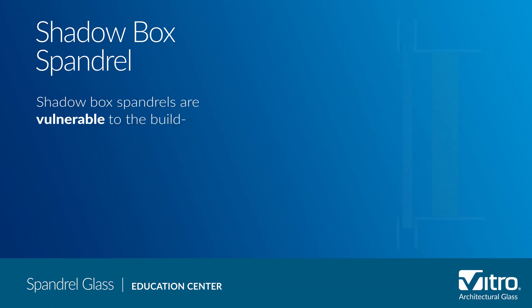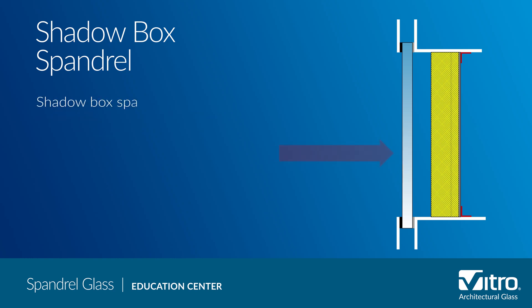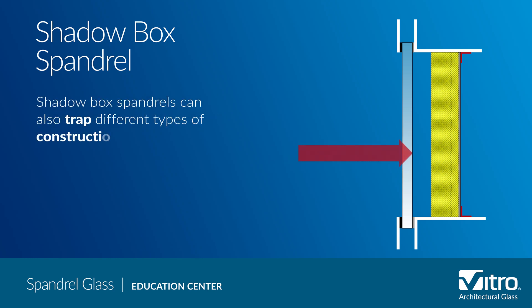When using shadow box spandrels, you need to consider that condensation and drying make shadow box spandrels vulnerable to the buildup of unsightly stains, even when a perfect moisture barrier is achieved. Shadow box spandrels also can trap different types of construction debris between the time they're glazed and the time the insulation is installed. VOCs from paint, sealants, and other materials can create a permanent residue on the finished spandrel.